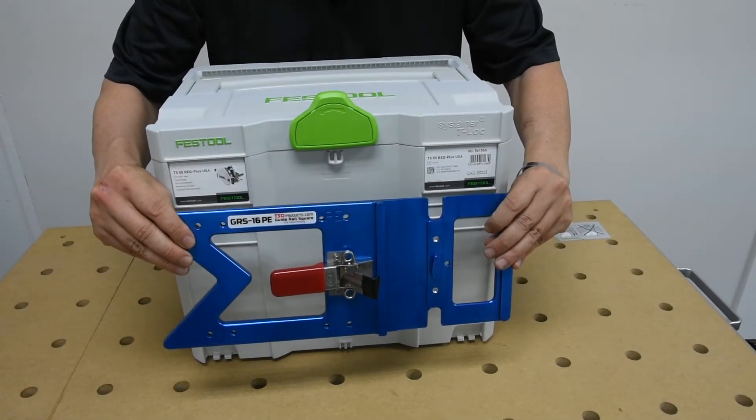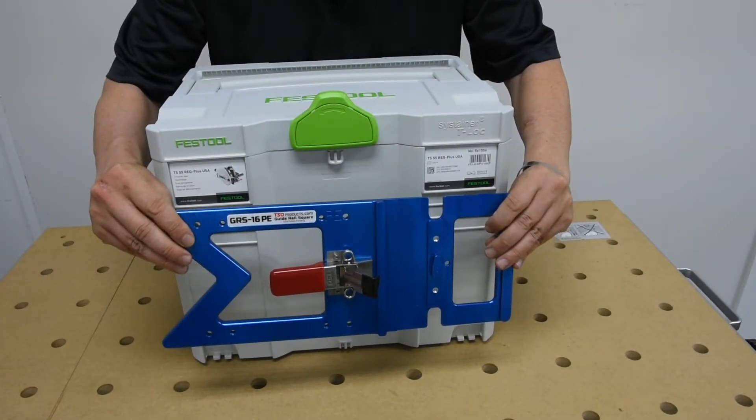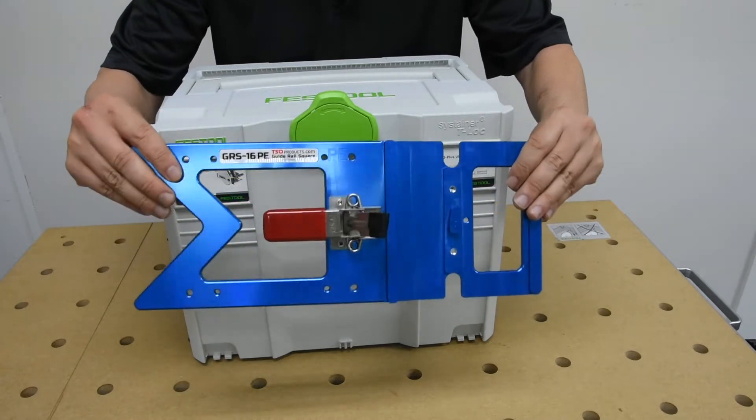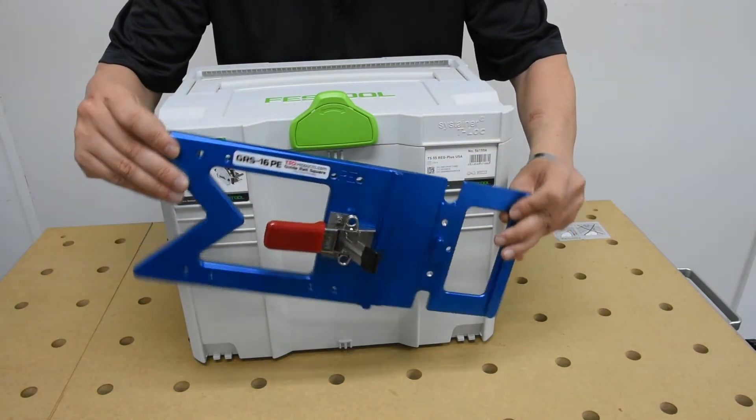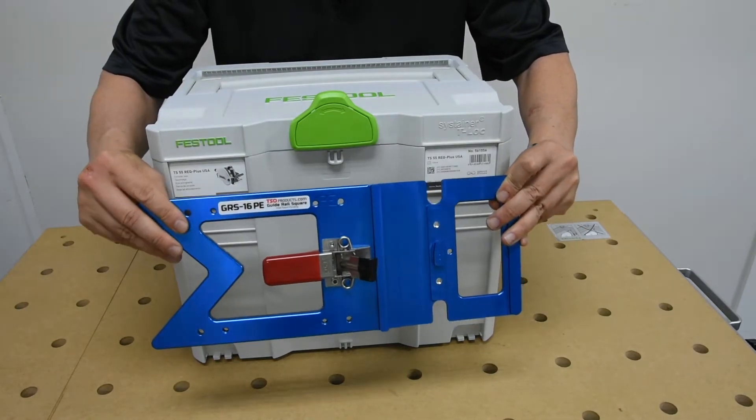Hi, this is Eric with TSO Products. This is going to be a quick video showing you how to take a GRS 16 PE parallel edge and get it to fit into a Systainer with the saw in it.